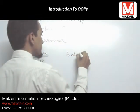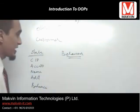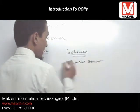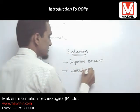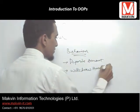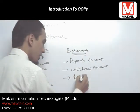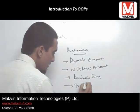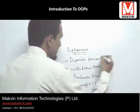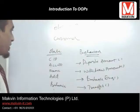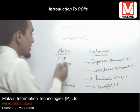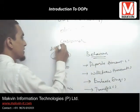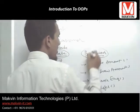Now, behavior — what can a customer do? A customer can deposit the amount, a customer can withdraw the amount. All these things come under behavior. The state of an object is called an attribute, and the behaviors are called methods.